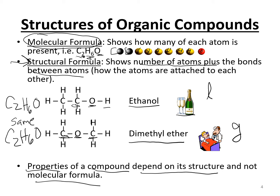Physical properties differ between these compounds: ethanol has a boiling point of 78°C while ether's is −23°C. Ethanol is not poisonous; ether can be poisonous in sufficient amounts. Ethanol reacts with sodium; ether does not. Chemical reactivity also differs between them. So the properties of your compound depend on its structure, not just its molecular formula — structure is really important.